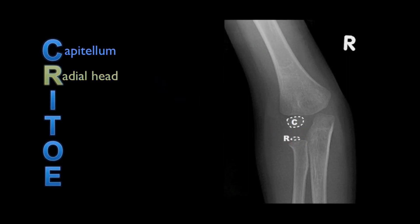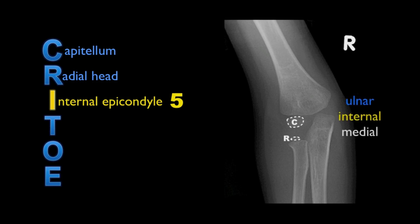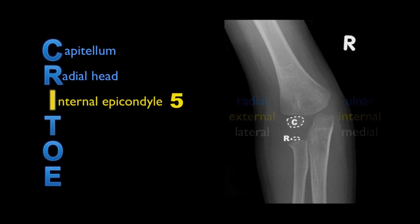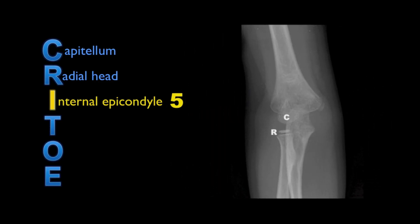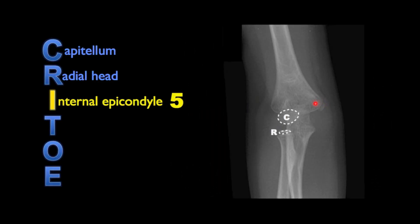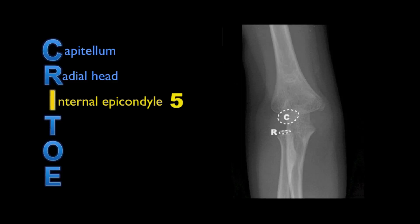The third ossification centre to appear is I, the internal epicondyle, appearing at around age 5. At this point it's worth remembering that the ulnar aspect of the elbow is the internal or medial side, while the radial aspect is the external or lateral side. This child has not yet developed their internal epicondyle ossification centre, so if we switch to a slightly older child we can see it here overlapping the distal humerus, which is typical of the internal epicondyle.